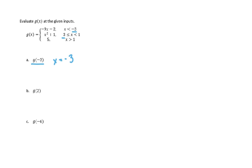We want to use the second function, because negative three is less than or equal to x, which is less than one. Since negative three must be less than or equal to x, negative three is included in the domain of our second function. So we are going to use negative x squared plus one to evaluate g of negative three.